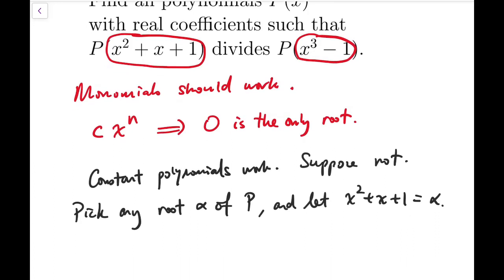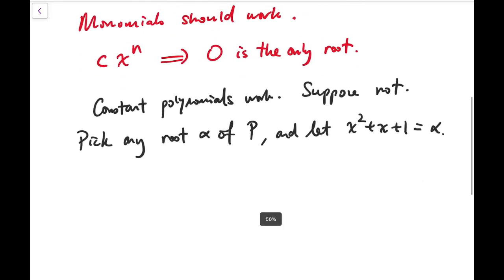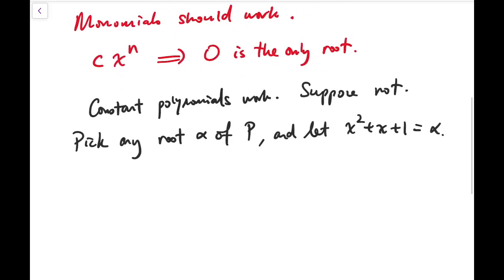Now, if x²+x+1 equals α, then we have to do some algebra to find out what would x³-1 become, in terms of α. We can do that by finding x-1, because x³-1 is simply this α times x-1. So, I do this by computing a square.